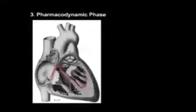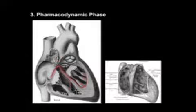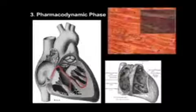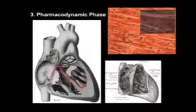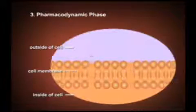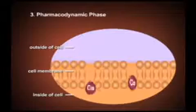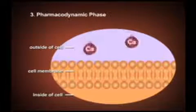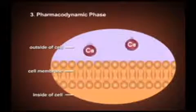Phase 3 is the pharmacodynamic phase, during which the metabolized drug interacts with drug receptors. For example, a calcium channel blocker interacts with calcium receptors to block inward movement of calcium, thus reducing contractility and dilation of the coronary arteries.